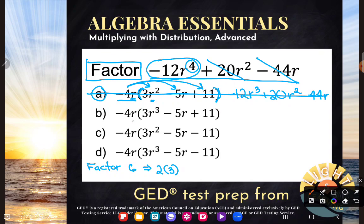So let's try B then. Negative 4r times 3r squared would give me negative 12. And then I have one, two, three, four r's now. So r to the fourth power. A negative times a negative is a positive. So plus four times five is 20r.